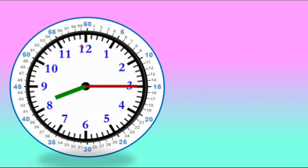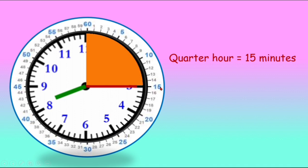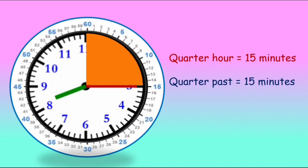If the minute hand moves from 12 to 3, it has completed a quarter of the clock — a quarter turn. So a quarter hour is 15 minutes. In one hour there are 60 minutes, so in a quarter hour there are 15 minutes. A quarter past means 15 minutes past.